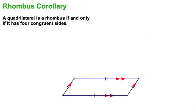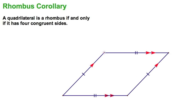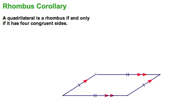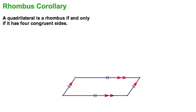To illustrate the rhombus corollary, we're going to start with a quadrilateral that's already a parallelogram. You can see it. You've got the marks, opposite sides parallel, opposite sides congruent.